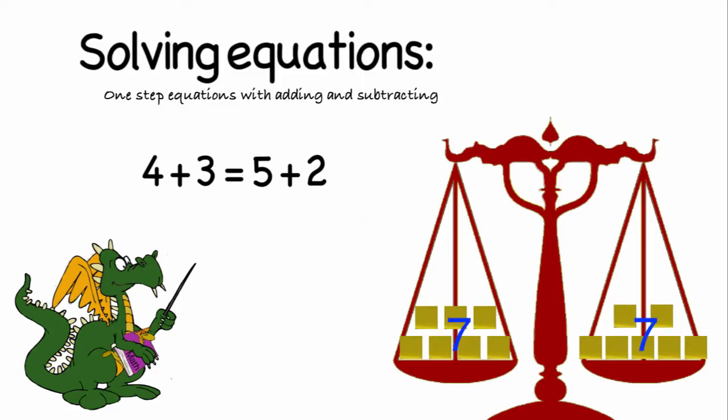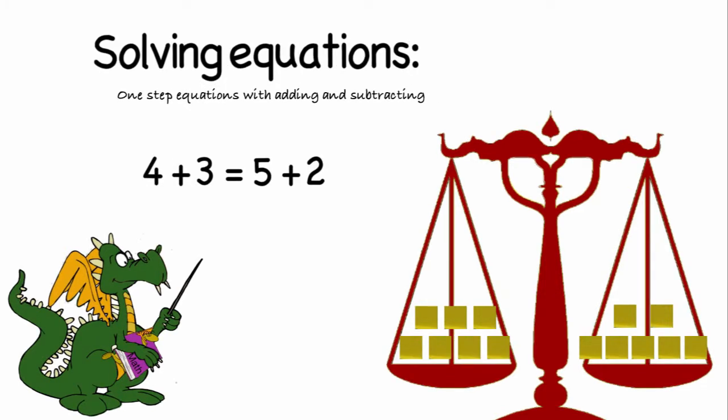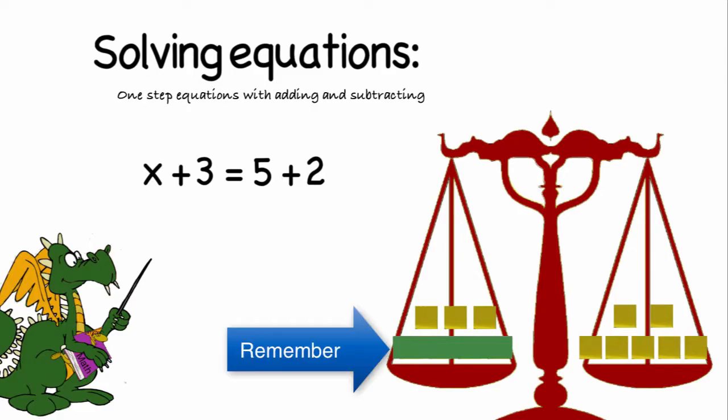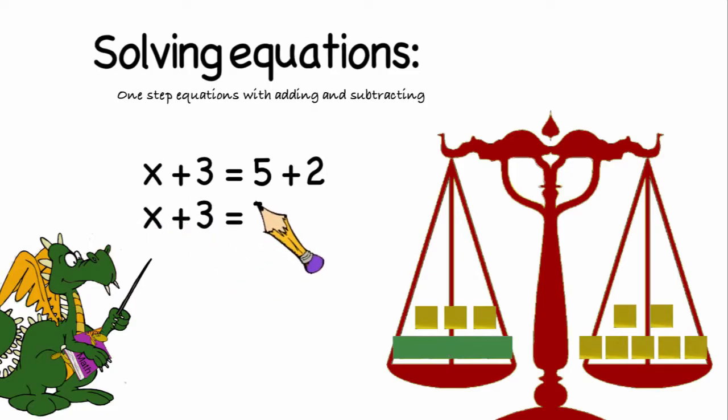But this is algebra. Shouldn't we be trying to find the value of an unknown? Well, we could have the equation x plus 3 is equal to 5 plus 2, where x represents the number that would make both sides of the equation equal. Remember, the green rod is used to represent an unknown quantity. In this case, it represents an x. Before we get started, let's go ahead and simplify this equation to x plus 3 is equal to 7.